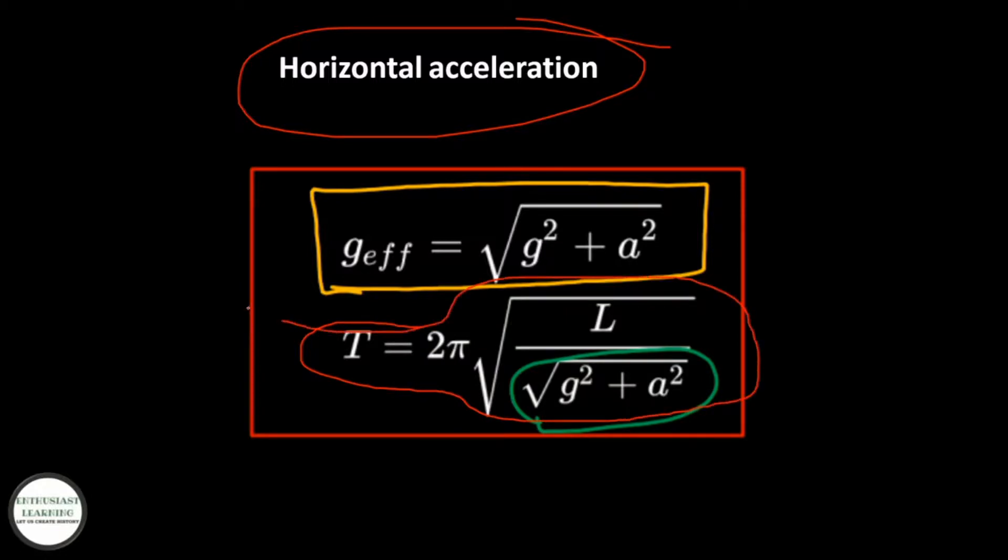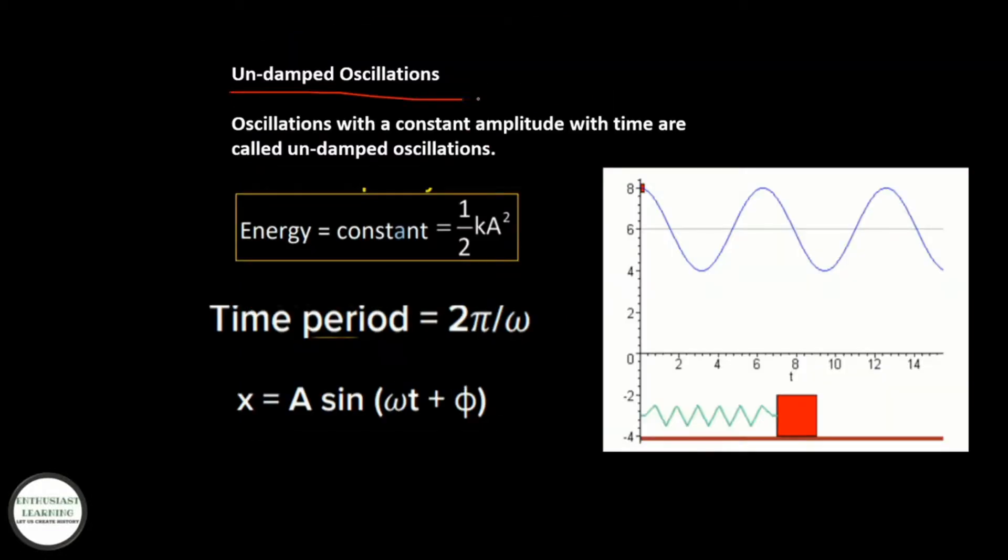Undamped oscillations: oscillations with constant amplitude with time are called undamped oscillations. Here, energy = (1/2)kA², time period = 2π/ω, and x = A sin(ωt + φ).